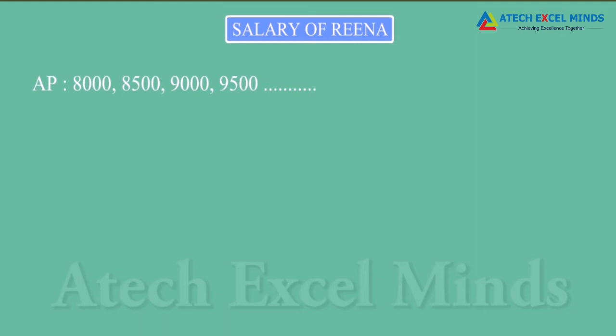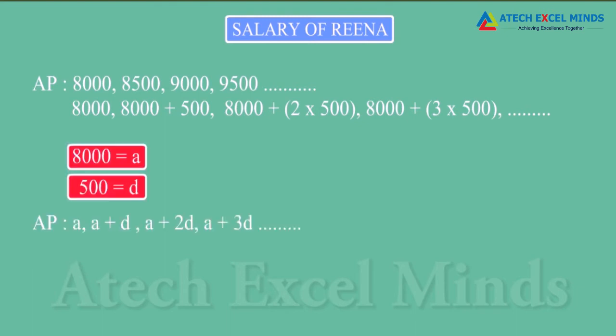Above AP sequence can also be written as 8,000, 8,000 plus 500, 8,000 plus 2 times 500, 8,000 plus 3 times 500, and so on.